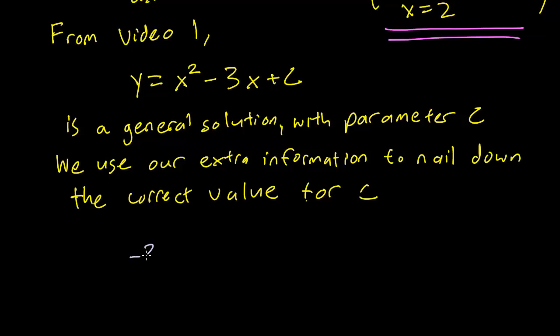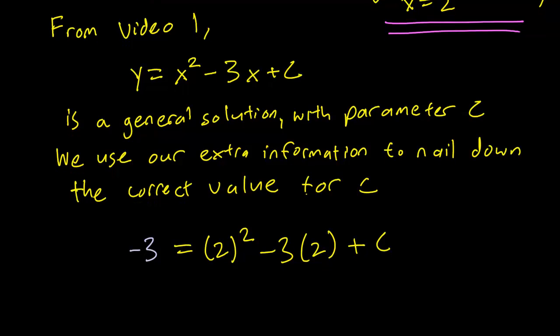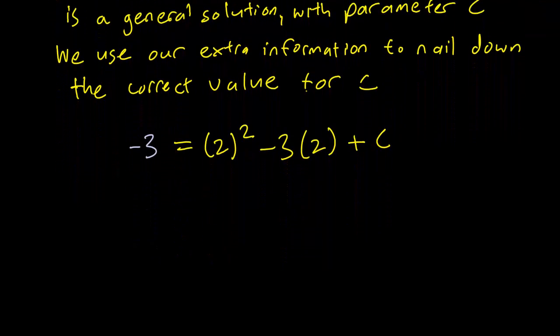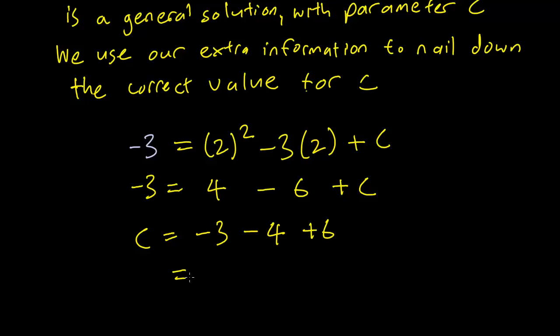Minus 3 equals 2 squared minus 3 times 2 plus c. We can then solve for c. So this simplifies to minus 3 equals 4 minus 6 plus c. And some algebra will get us that c equals minus 3 minus 4 plus 6 equals minus 7 plus 6, which is minus 1.